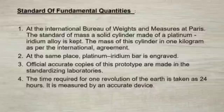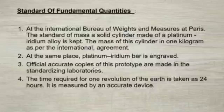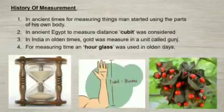The time required for one revolution of the earth is measured by means of an accurate device. This time is taken as 24 hours. One hour is considered to have 60 minutes and one minute 60 seconds.